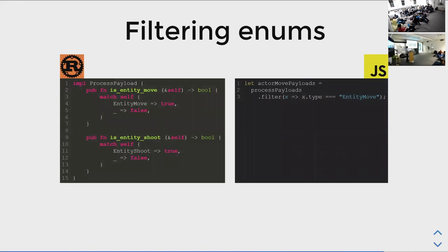One thing I haven't solved nicely is filtering enums in Rust. All the blogs say you have to write a boolean method for every enum value you want to check against — is_this, is_that — lots of copy-paste boilerplate. In TypeScript world these are called tagged unions: you just filter by the tag name of the enum. I don't know if there's a better way unless someone tells me I'm doing it wrong.